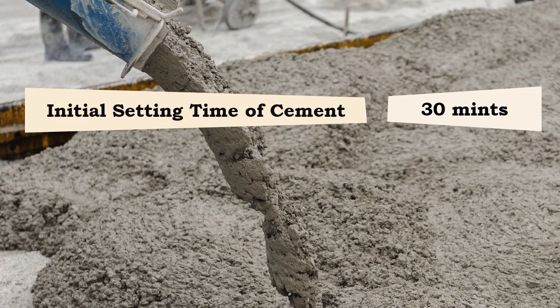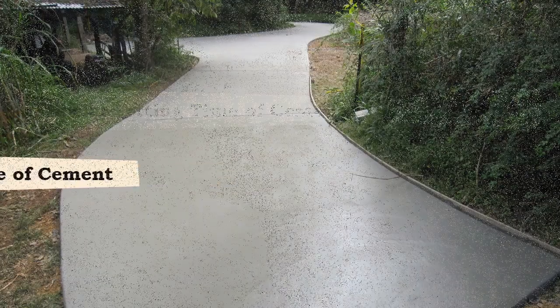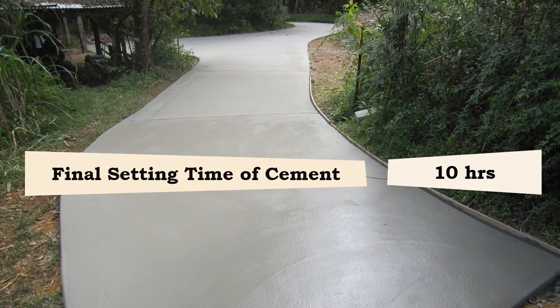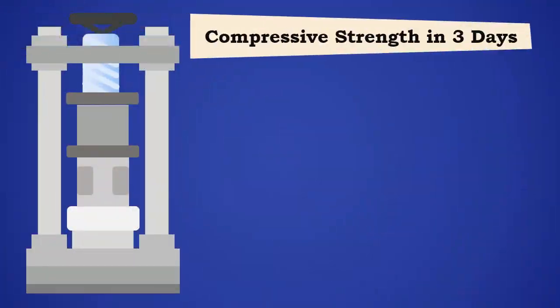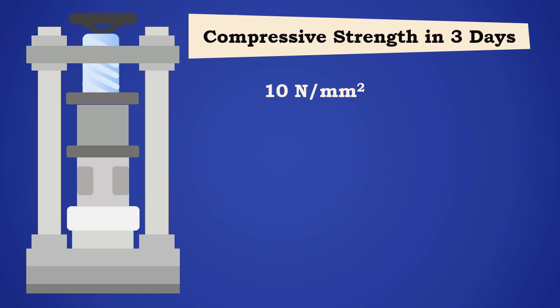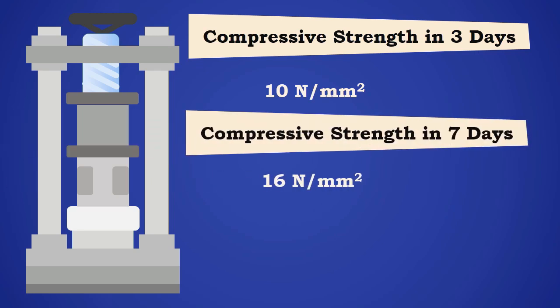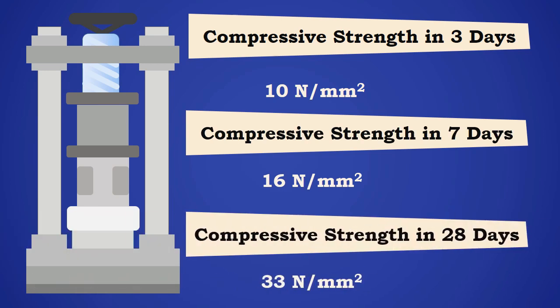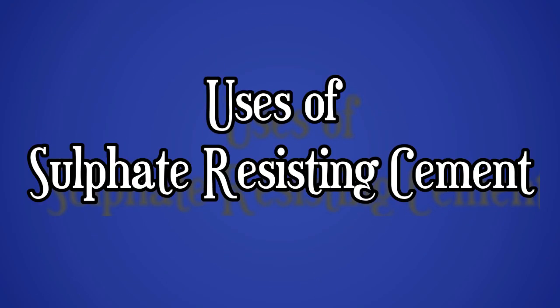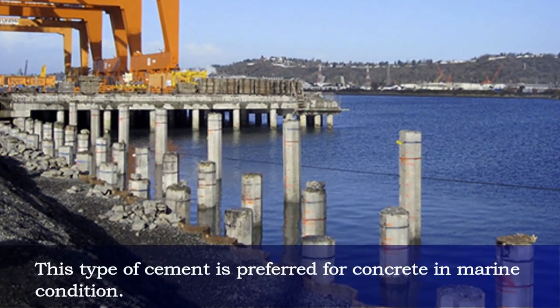The initial setting time of the cement is 30 minutes and the final setting time is 10 hours. The compressive strength after three days is 10 N/mm², after seven days is 16 N/mm², and after 28 days is 33 N/mm².